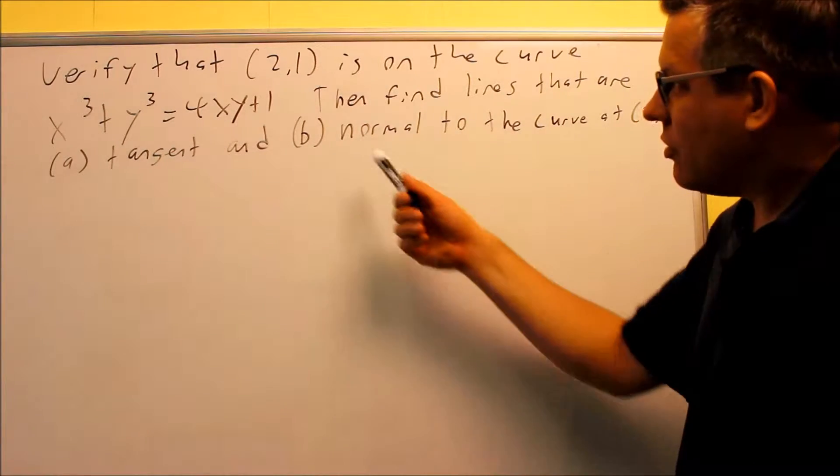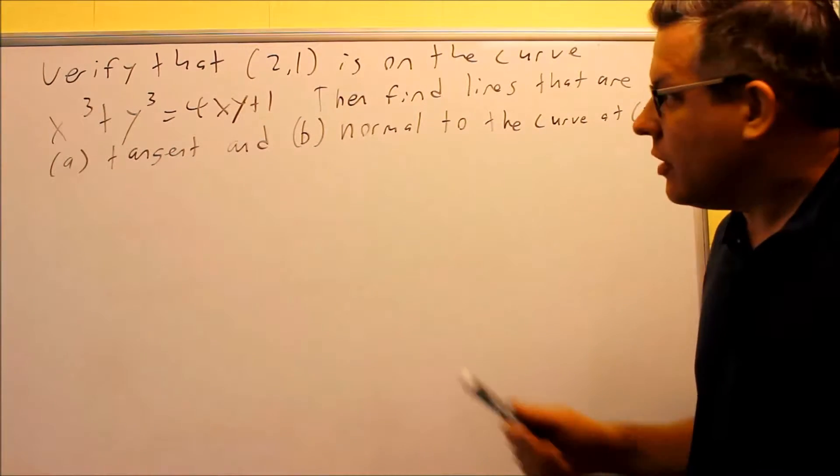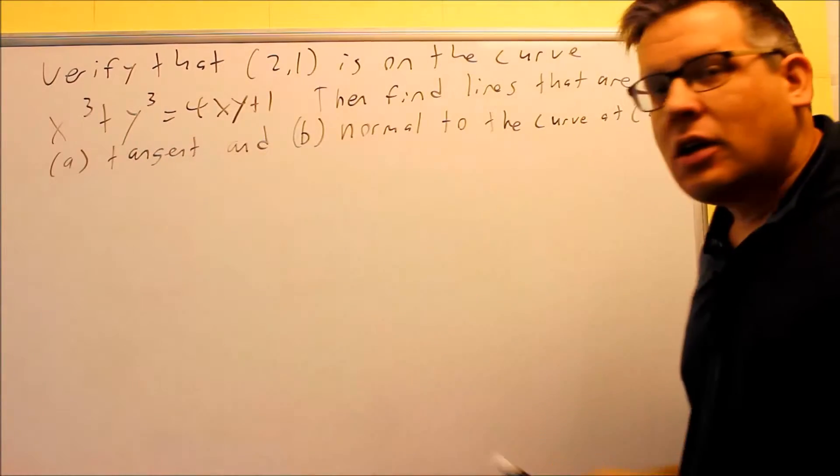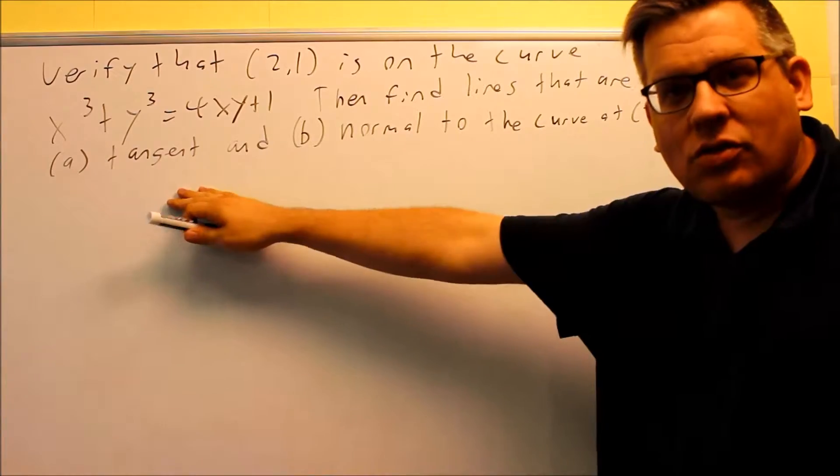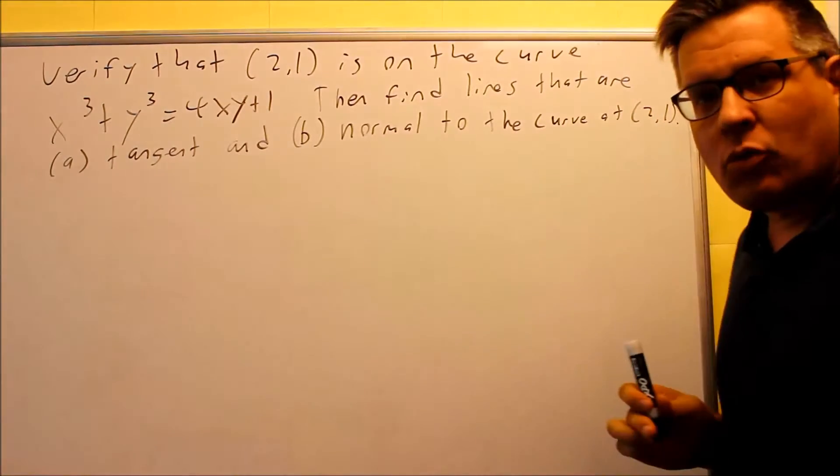So for this problem, it's asking us to verify that 2,1 is on this curve, and then we have to find two things. We want to find the line that's tangent to and normal to the curve at 2,1.